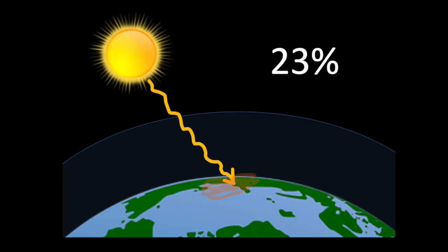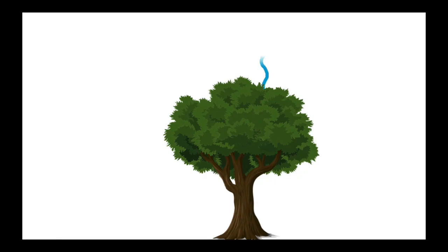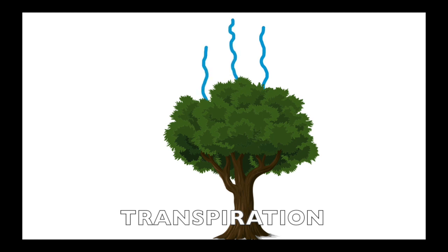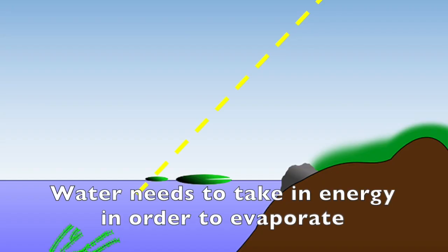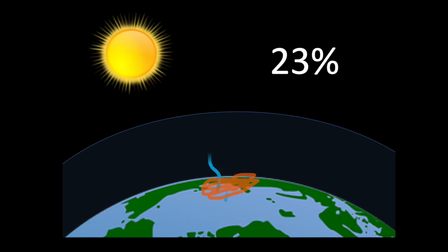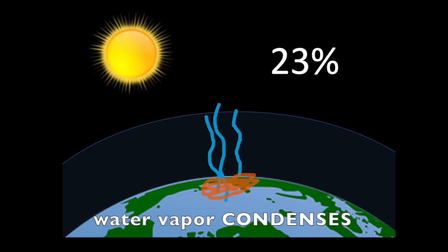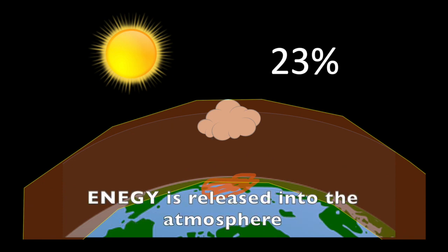About 23% of the energy absorbed by Earth's surface is moved to the atmosphere through the evaporation of water, and this also includes transpiration of water from trees and other plants. Evaporation is an endothermic process, which means that water needs to take in energy in order to evaporate. This energy is solar energy that was absorbed, especially energy that was absorbed by water particles in the ocean. After it evaporates, water vapor condenses into liquid water droplets in the clouds. Condensation is an exothermic process, and energy is released into the atmosphere.